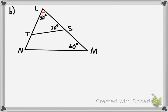To find a second pair of congruent angles, we calculate the third angle in each triangle. In the larger triangle, 50 and 70 add up to 120; subtract from 180 and you get 60 degrees. That 60-degree angle is congruent to the corresponding angle in the smaller triangle. Angle N turns out to be 70 degrees. Since there are two pairs of congruent angles, the triangles are similar. I'll name the bigger triangle first: triangle LTS is similar to...